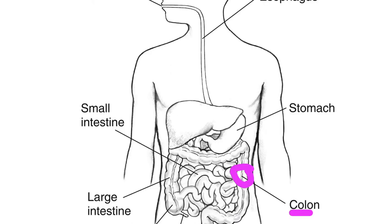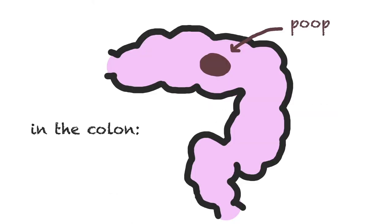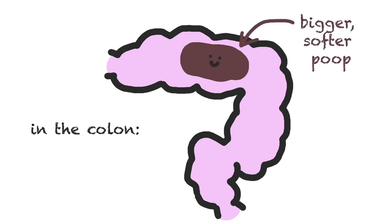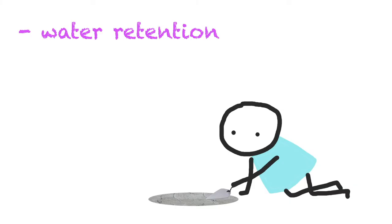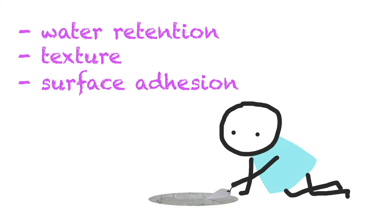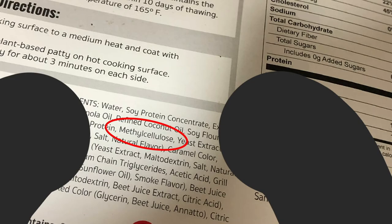In the colon, methyl cellulose absorbs large amounts of water to soften and bulk the stool so that you can poop easier. It can also be used in construction materials like cement because it helps with water retention, thick texture, and its ability to stick to surfaces.